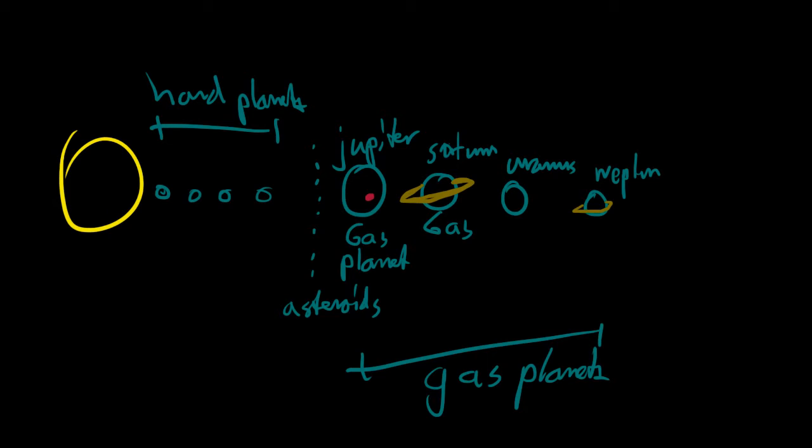And Saturn, for example, if we had some water, a big ocean like this, then Saturn would just float on it. It would just float like this. Because it's made of gas, it will actually just be on top while the Earth would just sink down, of course. It would lie here on the bottom because that's hard planets. Jupiter will probably also sink, but not very fast.